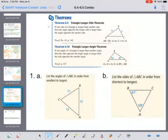Last thing we're going to look at is 6.5, which is really just talking about the connection between angle measures and side measures. The longer side has to be across from the larger angle, and the larger angle is across from the larger side, and vice versa.